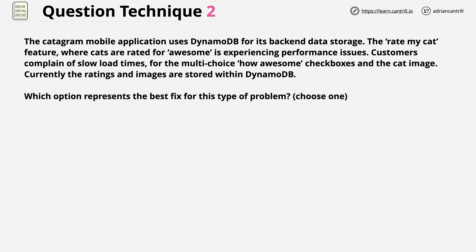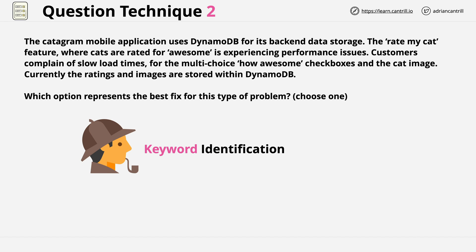The question line itself asks: which option represents the best fix for this type of problem? Choose one. As with the previous example, the first step after having a quick read of the question is to identify keywords — words that are key to understanding the scenario and influencing which answers we select. Pause the video, have a think about what you think are the keywords, then resume when you're done.